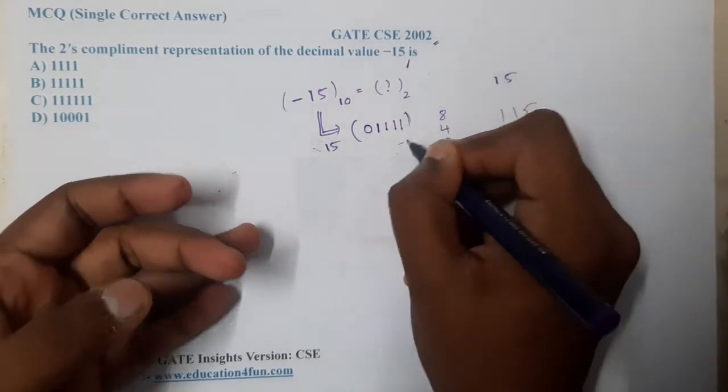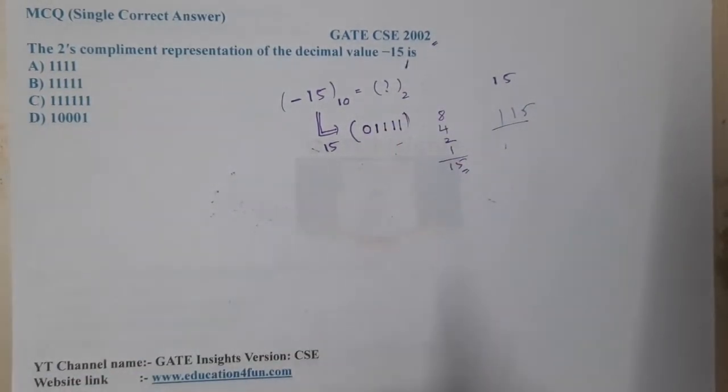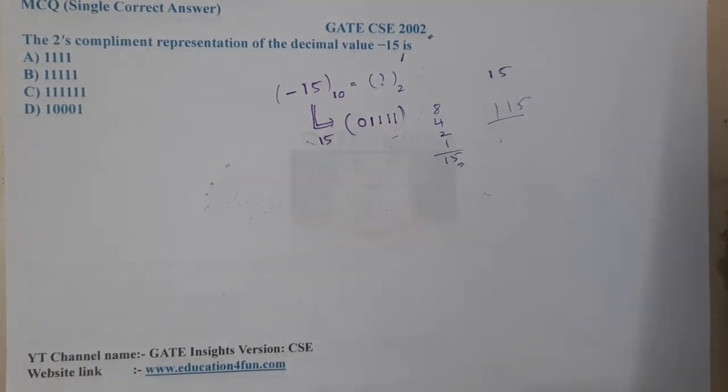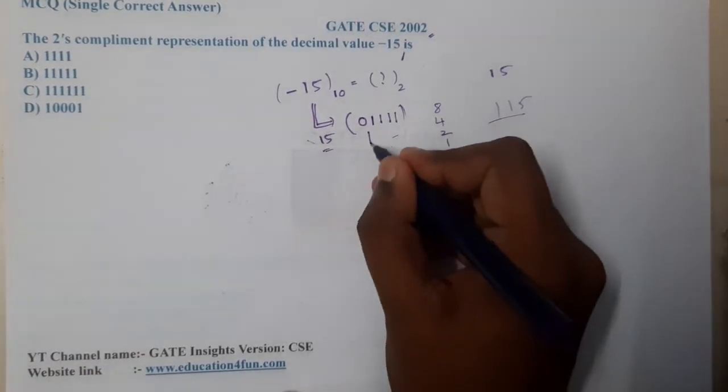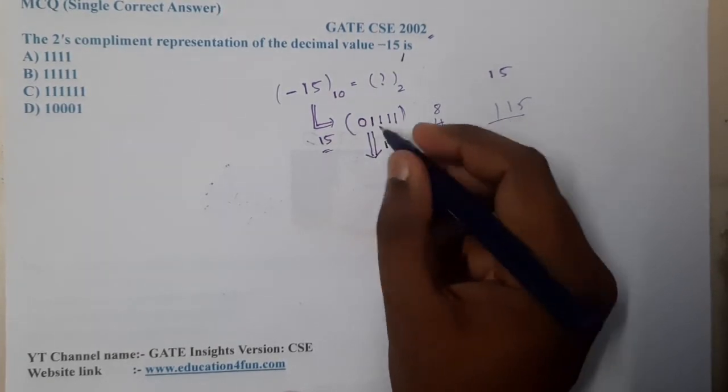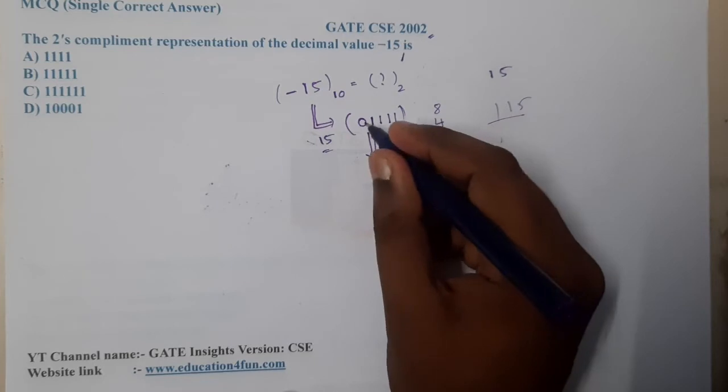So what we need to do to get a minus 15 value? First you will apply 1's complement for this. What is a 1's complement? You will just complement each bit. So instead of 0 write 1, instead of 1 you write 0.